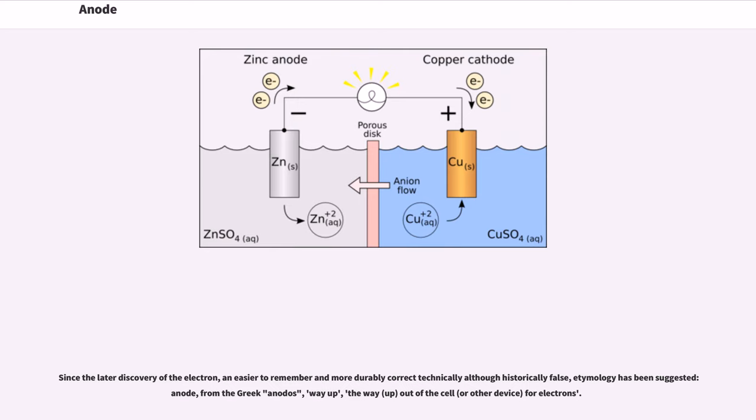Since the later discovery of the electron, an easier to remember and more durably correct (technically although historically false) etymology has been suggested: anode, from the Greek ἀνοδ (an-hodos, way up), the way up out of the cell or other device for electrons.